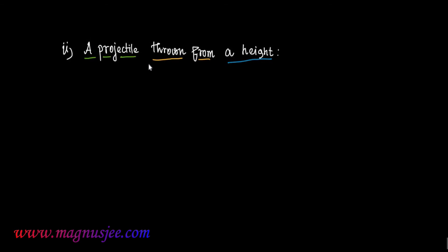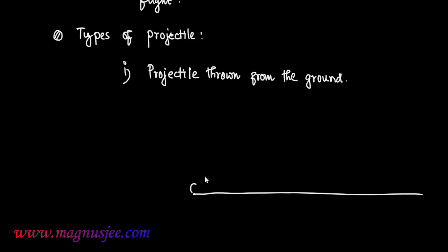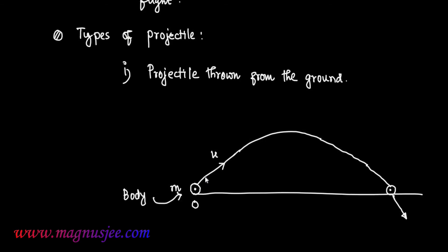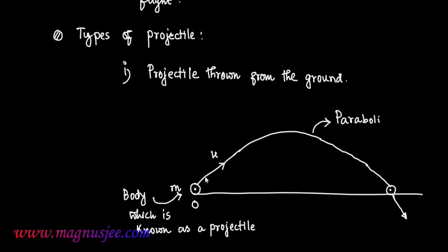Now we can draw the diagram of a projectile thrown from the ground. From point O, a projectile of mass m is thrown at an angle theta with the horizontal. U is the initial velocity of projection, and the projectile strikes the ground at point B after describing a parabolic trajectory. This body of mass m thrown with initial velocity u at angle theta is the projectile thrown from the ground.